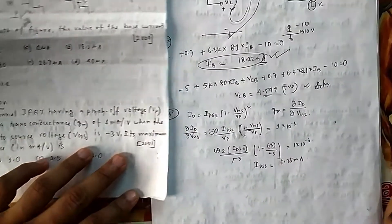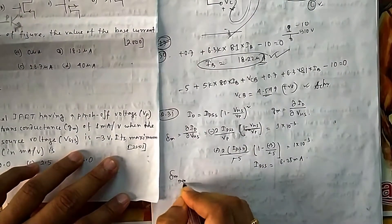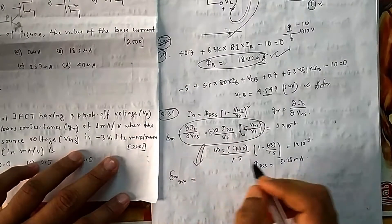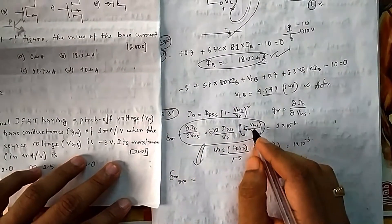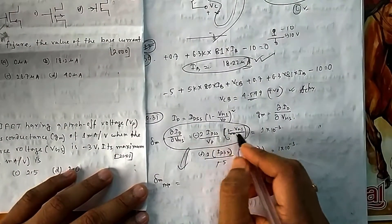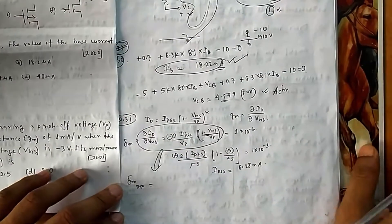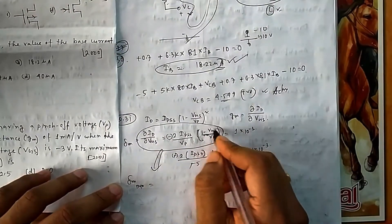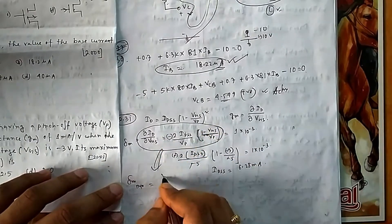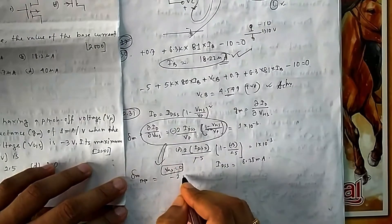Now they ask for maximum transconductance g_m_max. Maximum occurs when V_GS = 0, because I_D is maximum (equal to I_DSS) at V_GS = 0. Substituting V_GS = 0 into the g_m formula gives g_m_max = 2 × I_DSS / |V_P|.